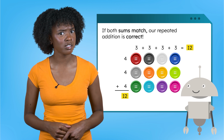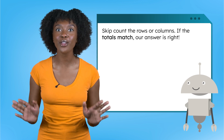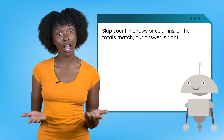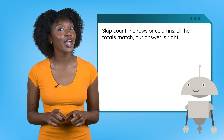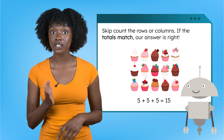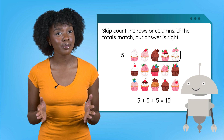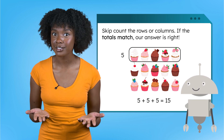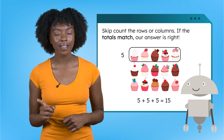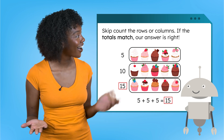You mean there's another way to check our work? By skip counting! After finding the total, we can skip count all the rows or columns. If the totals match, our answer is correct. Try it with me. Mia added the rows in this array: five plus five plus five equals fifteen. Since there are five cupcakes in each row, we can skip count by fives to check. Five, ten, fifteen. The totals match. Nice work, Mia.